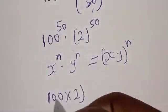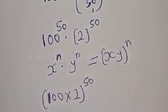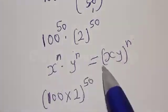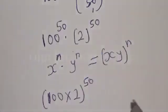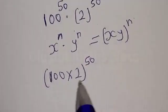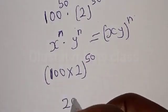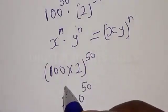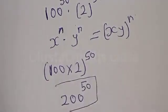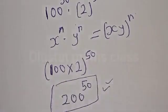Multiplied by 2 raised to power 50. Because s is 100 and y is 2 in this case, the exponent is 50. So we have 100 multiplied by 2, which is 200, raised to power 50. This is the final answer. If you have enjoyed the class, please don't forget to like, share, comment and subscribe. Thank you.